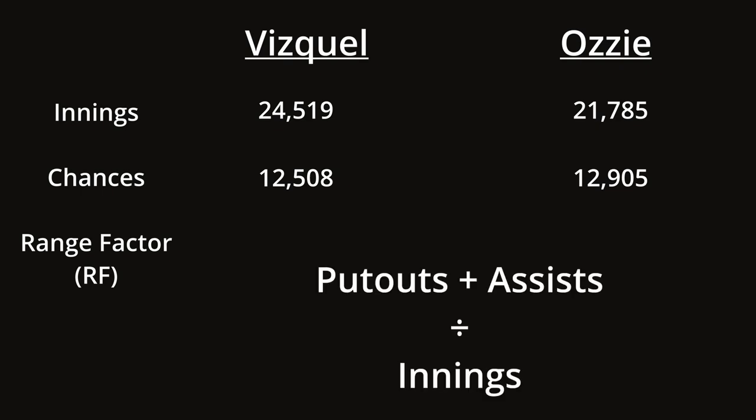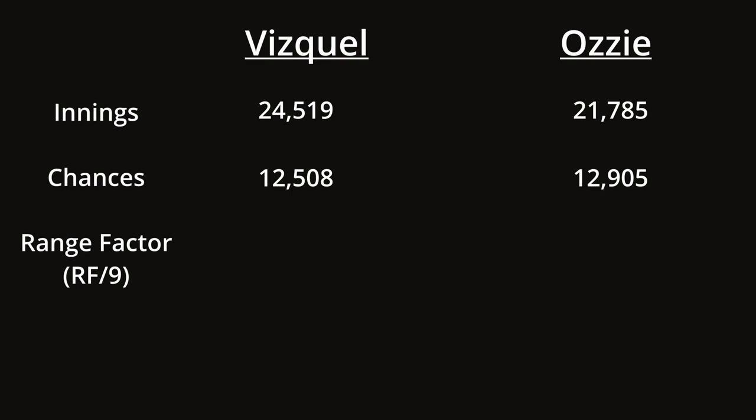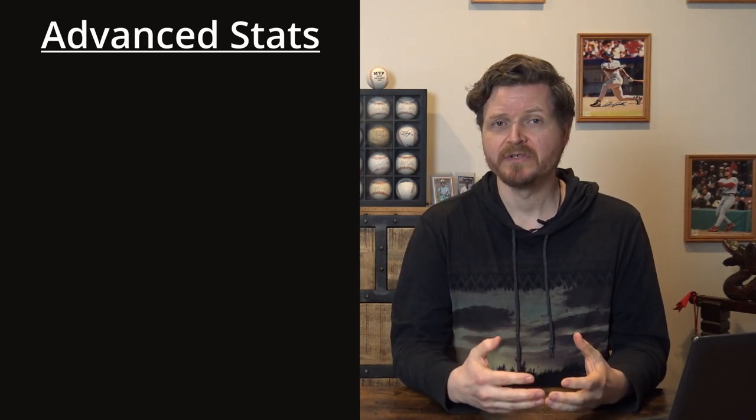This introduces our first defensive metric: range factor. The formula is put outs plus assists divided by innings, usually expressed as range factor per nine innings — simply how many balls can a player reach per nine-inning game, excluding errors. Using this stat, Vizquel had a range factor per nine innings of 4.52, while the Wizard had 5.22, demonstrating the Wizard's clear superiority. Vizquel was a good defensive player, but not on the same plane as Ozzie Smith.